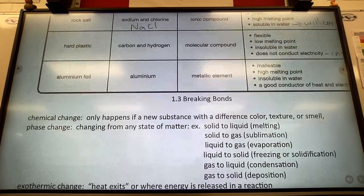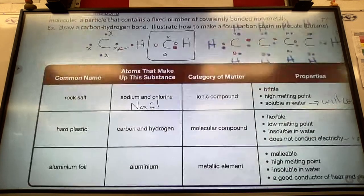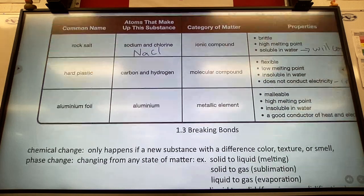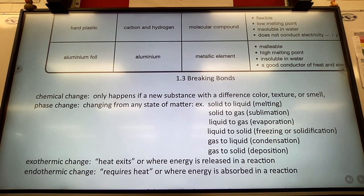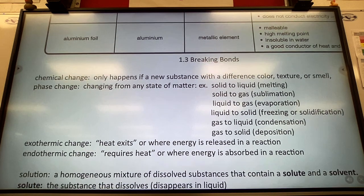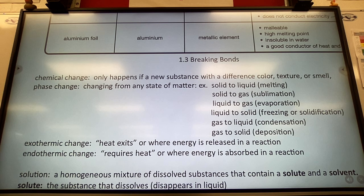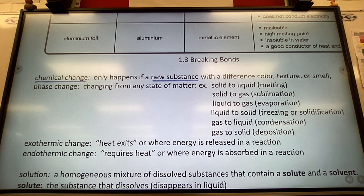Forming bonds is driven by elements wanting stability. But if you want to break those bonds, there are several ways, and when you do you typically create a new substance. The key term is chemical change — this only happens if a new substance is produced. If you undergo a process and get no new material, it was a phase change, not a chemical change.